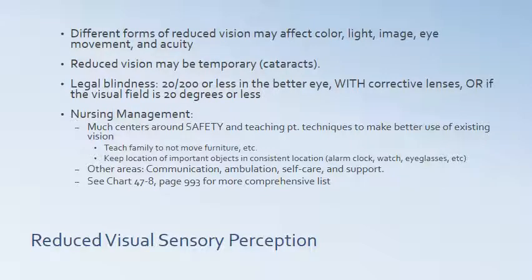With reduced visual sensory perception, different forms of reduced vision may affect color, light, image, eye movement, and acuity. Reduced vision may be temporary — such as with cataracts that improve with surgery. Legal blindness is defined as vision of 20/200 or less in the better eye with corrective lenses, meaning you must stand 20 feet away to see something someone else can see from 200 feet. It also includes a visual field of 20 degrees or less.